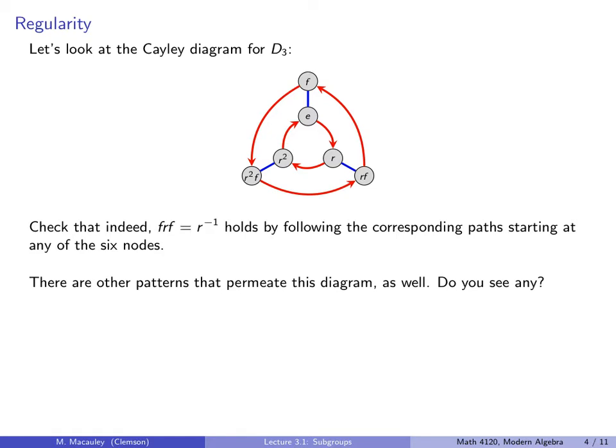There are other patterns that permeate this diagram. Do you see any? Here are a couple. F squared is always the identity, in other words, following the blue path twice gets you back to where you started. And R cubed equals the identity. So no matter where you start, if you do three R's, you get back to where you started.